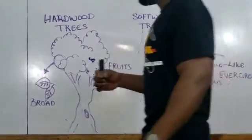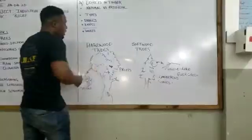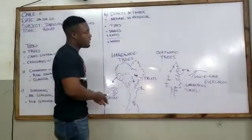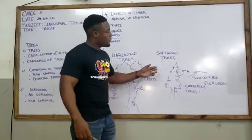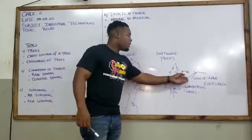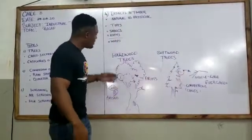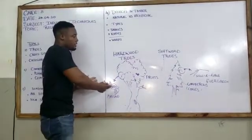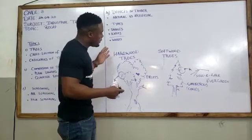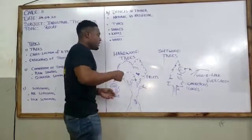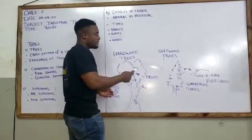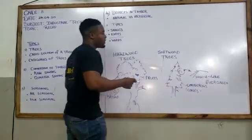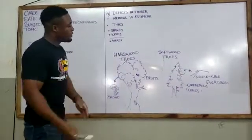Just to recap what we said, hardwood trees, first thing to note, they have broad leaves versus softwood trees with the small needle-like leaves. The hardwood trees lose their leaves throughout the seasons. The term we would use is, they are deciduous. While on the other hand, softwood trees are evergreen, which means they keep the leaves green throughout the season.